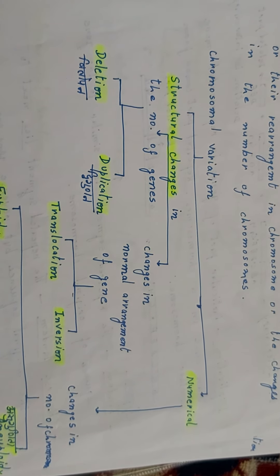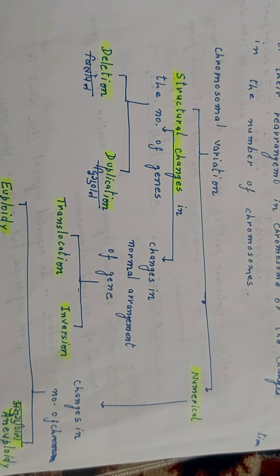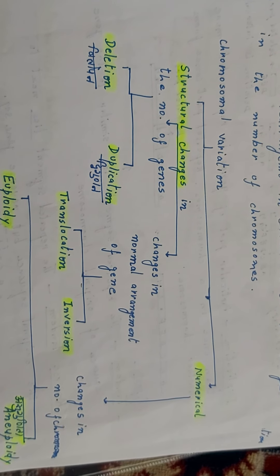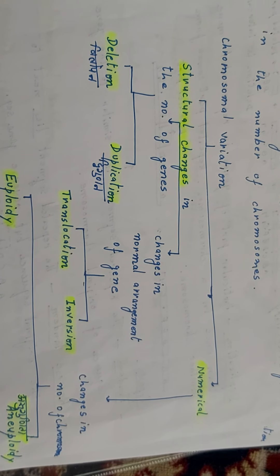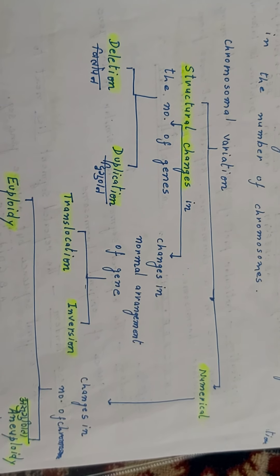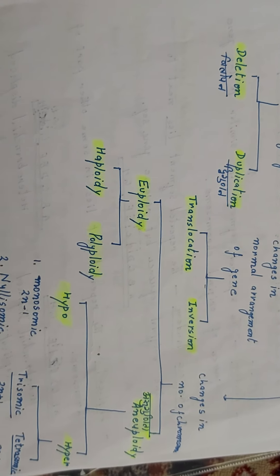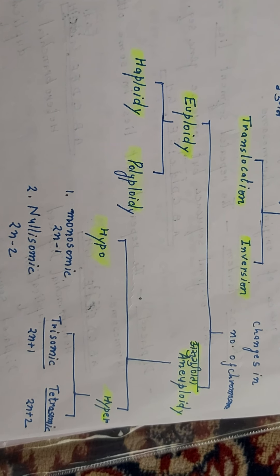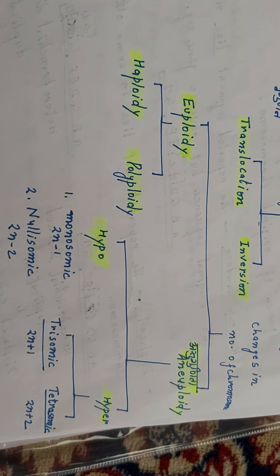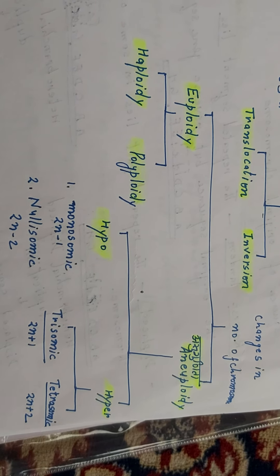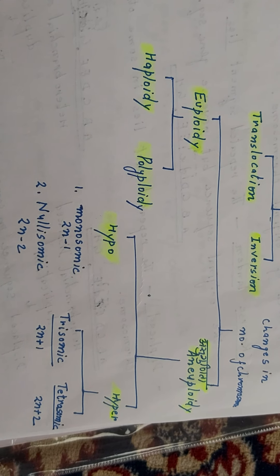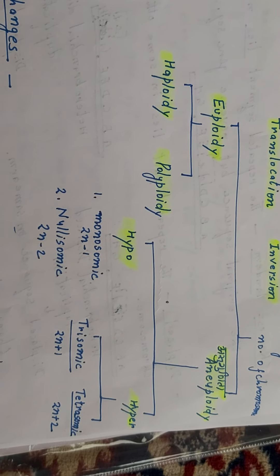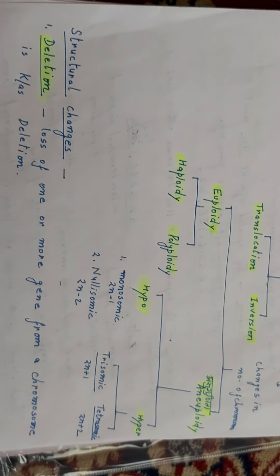Chromosomal variation can be of two types: structural changes and numerical changes. Structural changes can be changes in the number of genes and changes in the normal arrangement of genes. Changes in the number of genes are of two types: first is deletion, another is duplication. Changes in the normal arrangement of gene are translocation and inversion. Numerical changes — changes in the number of chromosomes — are known as euploidy and aneuploidy. Euploidy is again of two types: haploidy and polyploidy. Aneuploidy has hypo and hyper types.